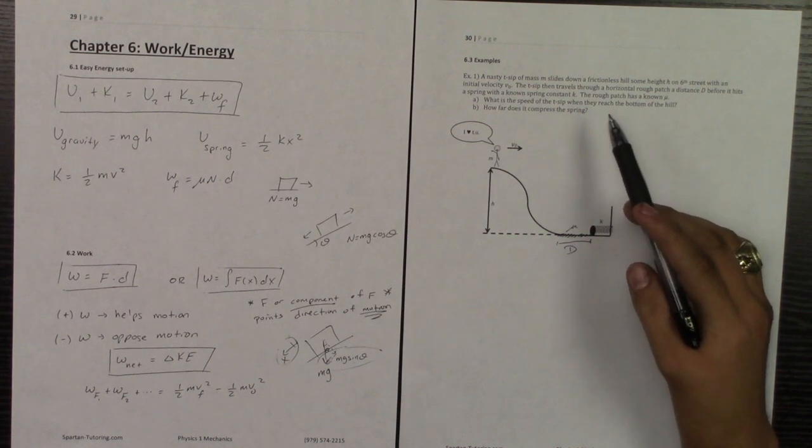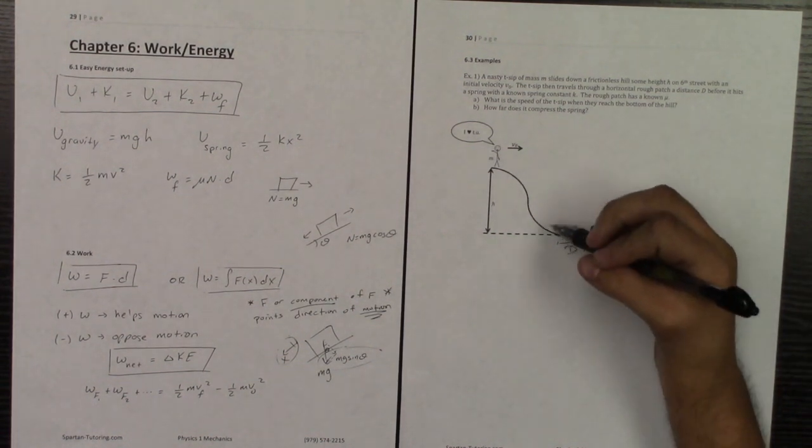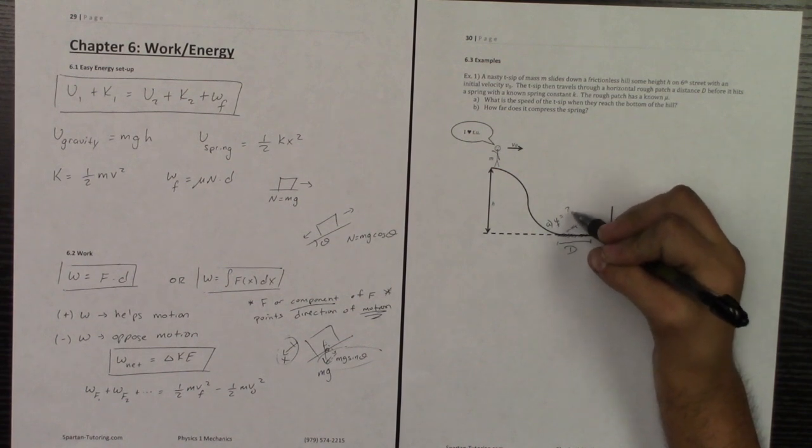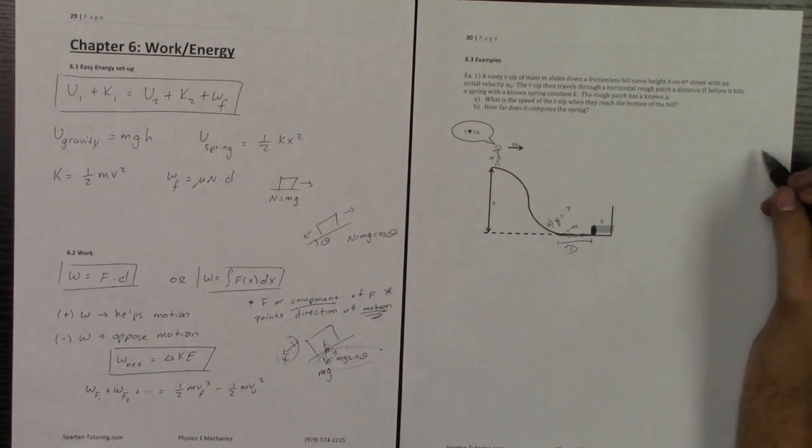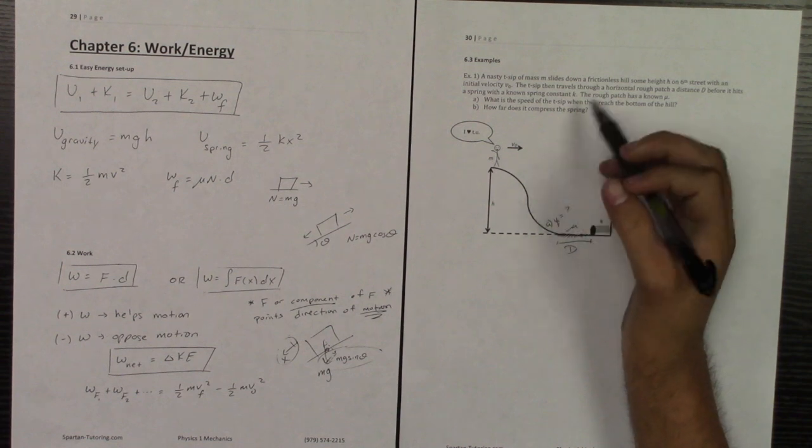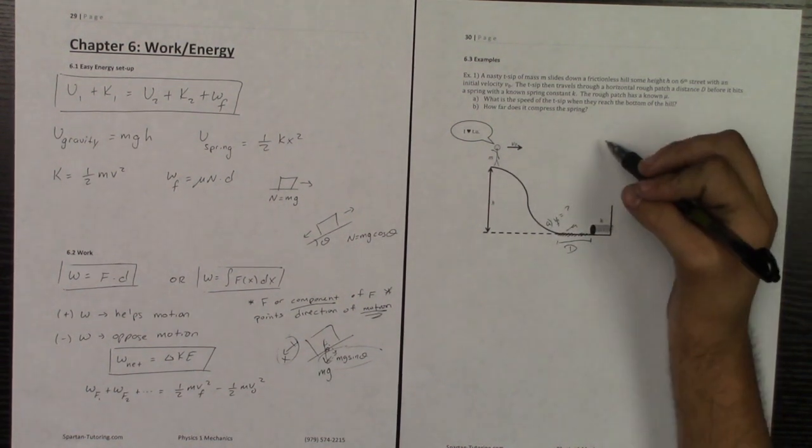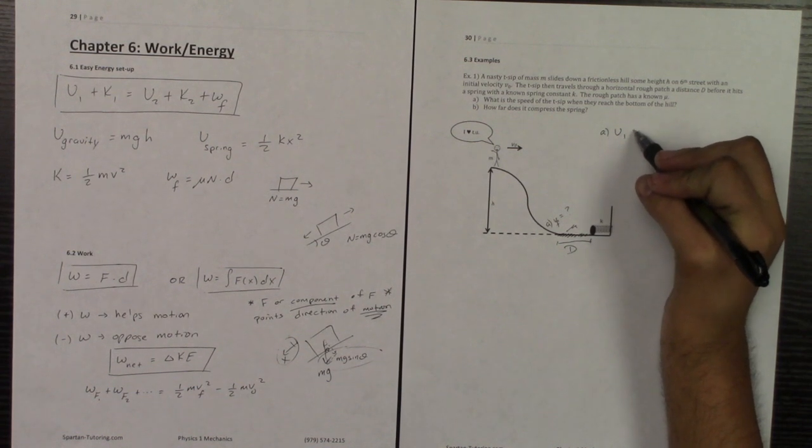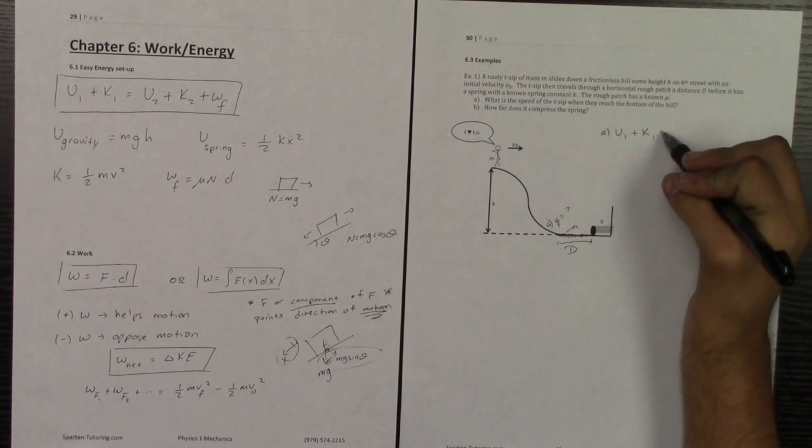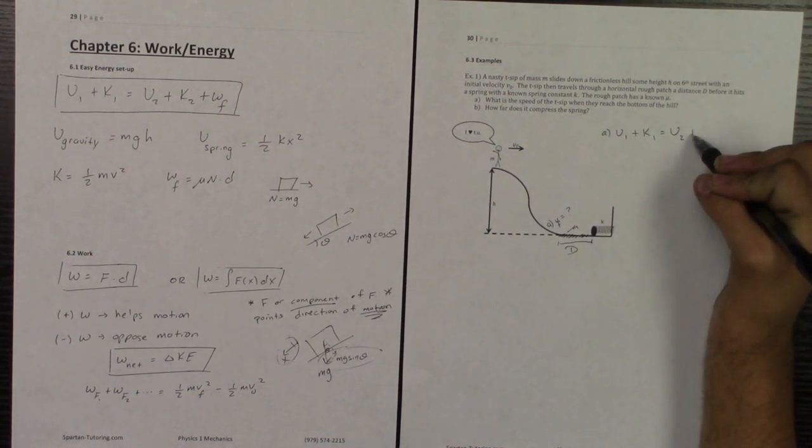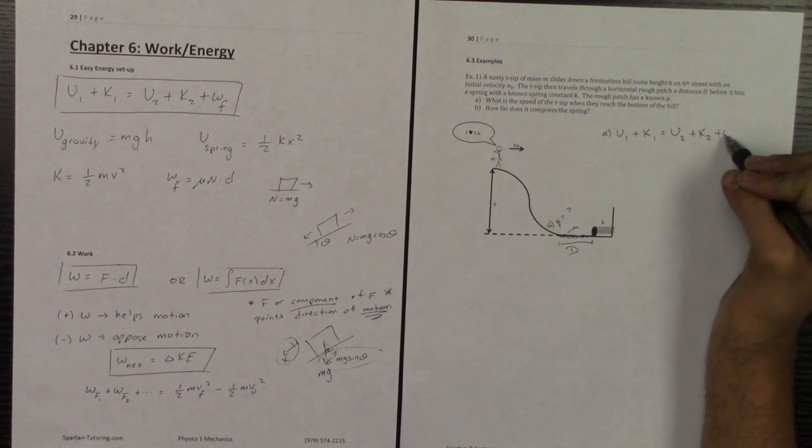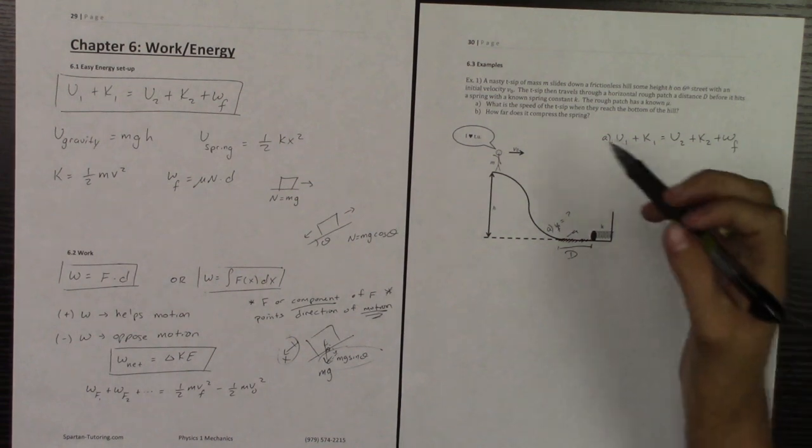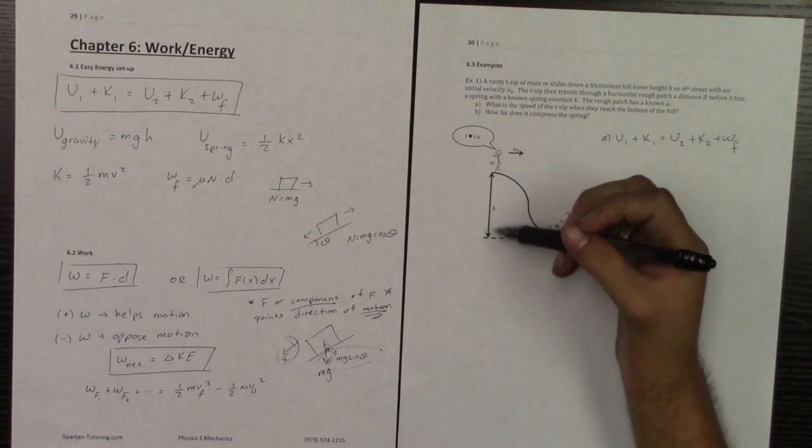Part a says what is the speed of the t-sip when it reaches the bottom of the hill? So in part a, at the bottom, what is that velocity? Now there is no friction along that hill, so we'll just be aware of that. And so in part a, I'm going to go u1 plus k1 equals u2 plus k2 plus any work done by friction.